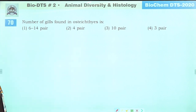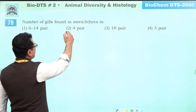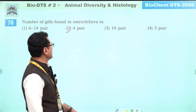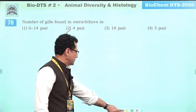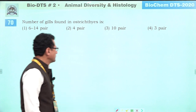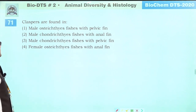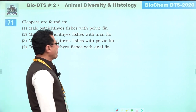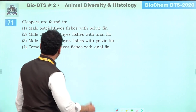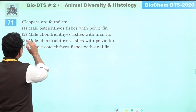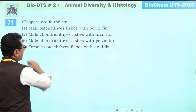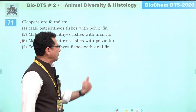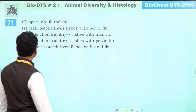Number of gills found in Osteichthyes: it is absolutely four pairs. Claspers are found in male members of class Chondrichthyes. They help in copulation and transfer of sperm into the female body. Answer is three.